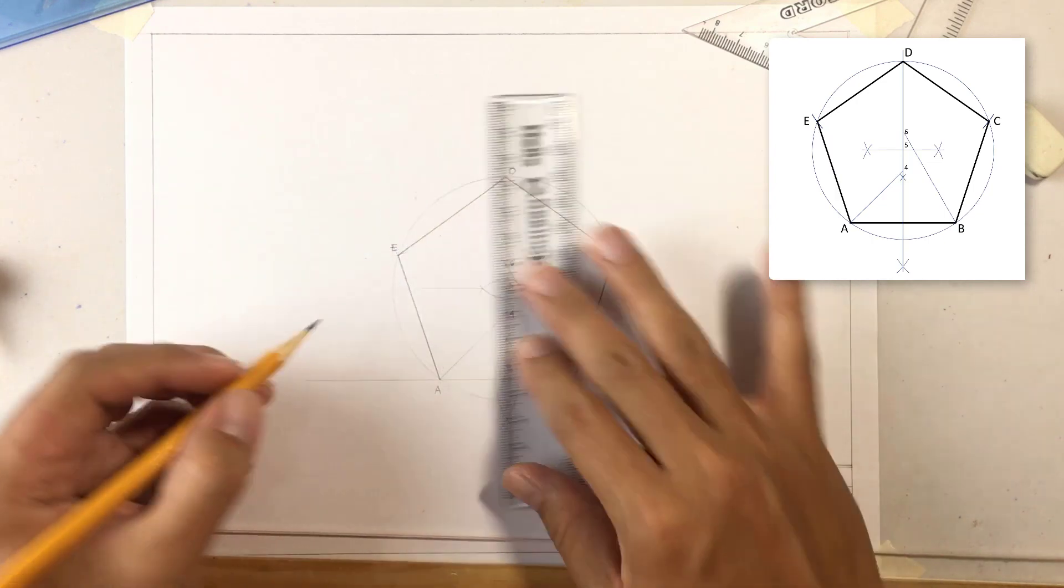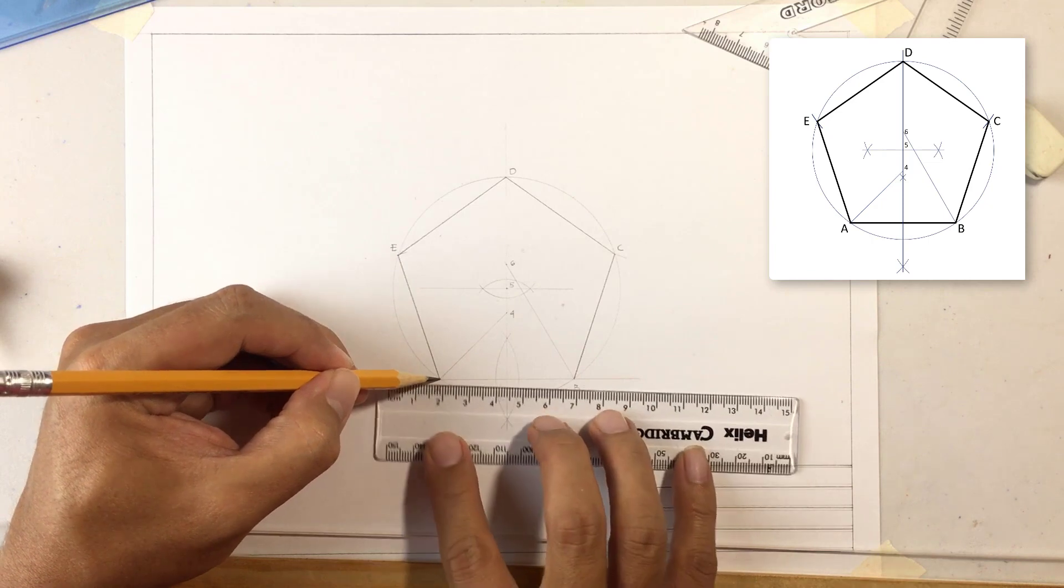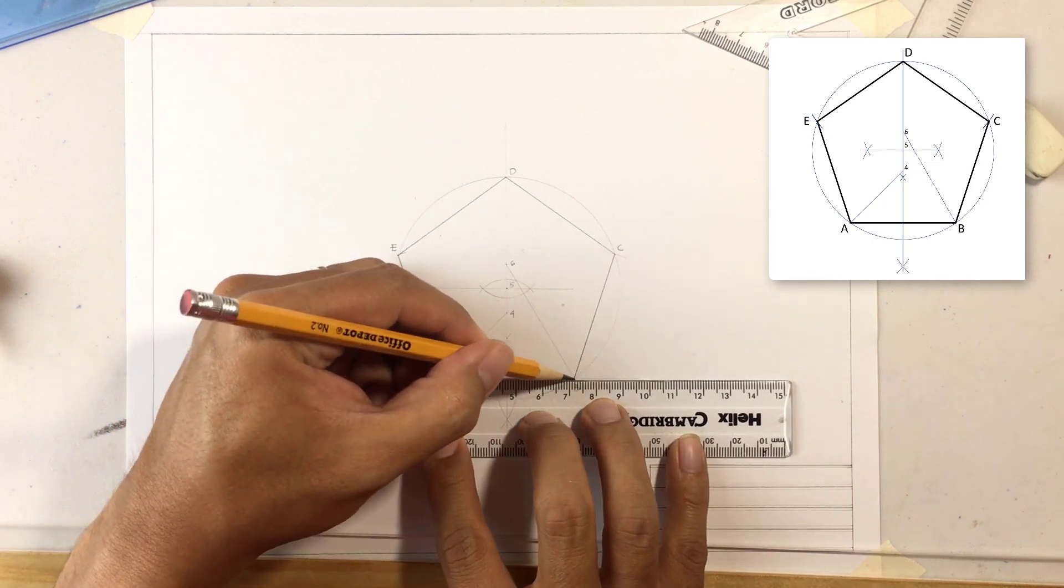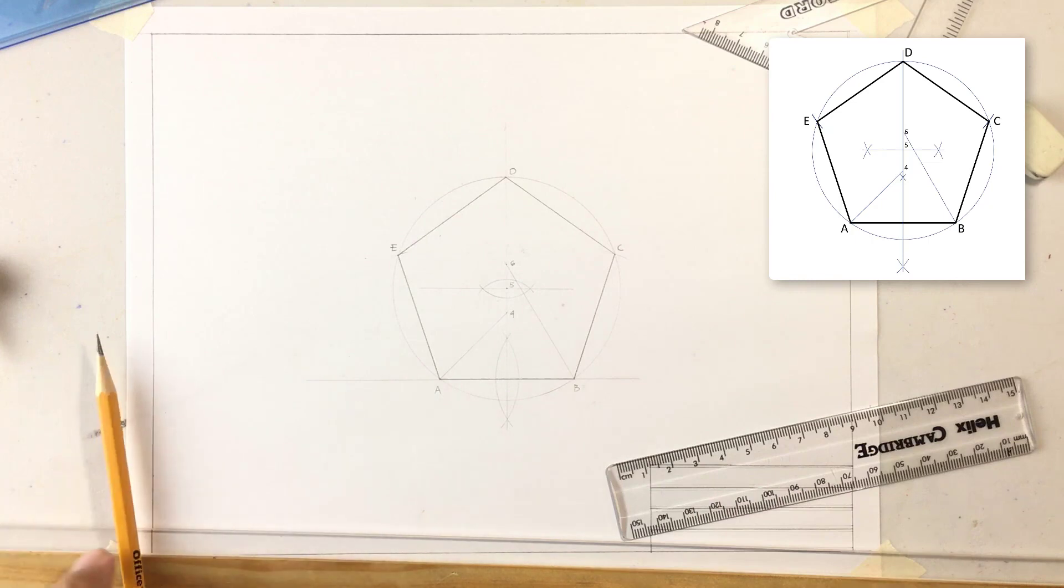E to A. Then darken A and B. And now you have your regular pentagon constructed. Thank you.